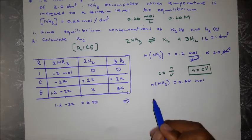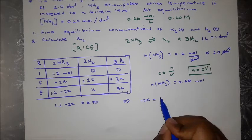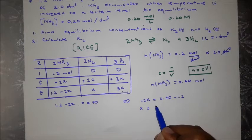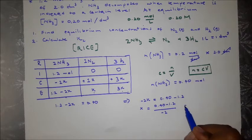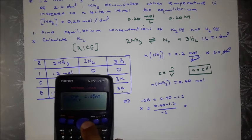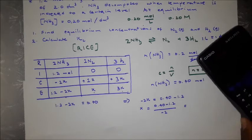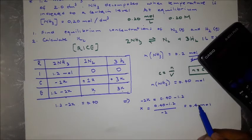Solving for x: −2x = 0.40 − 1.2, so x = (0.40 − 1.2) ÷ (−2). Calculating: 0.4 − 1.2 divided by −2 gives x = 0.4. So x = 0.4 mol.